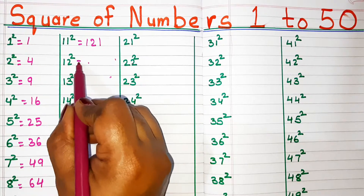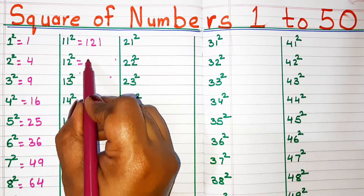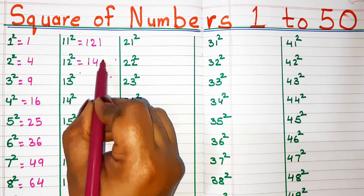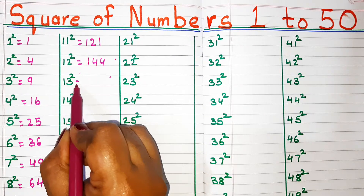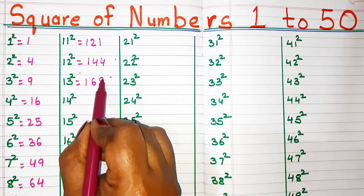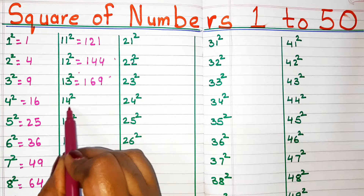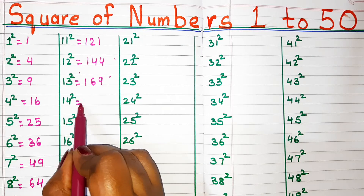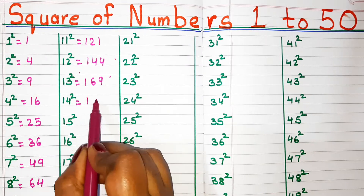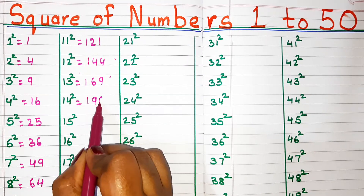Square of 12, 144. Square of 13, 169. Square of 14, 196.